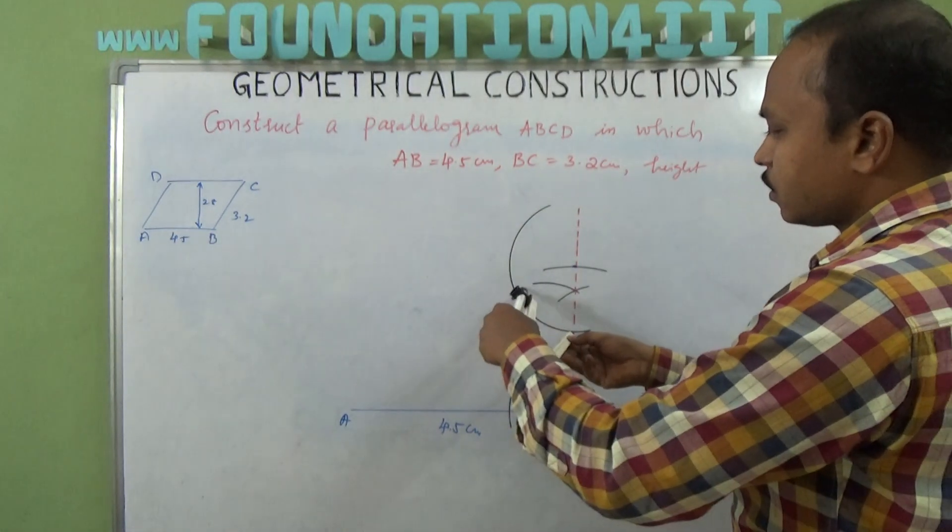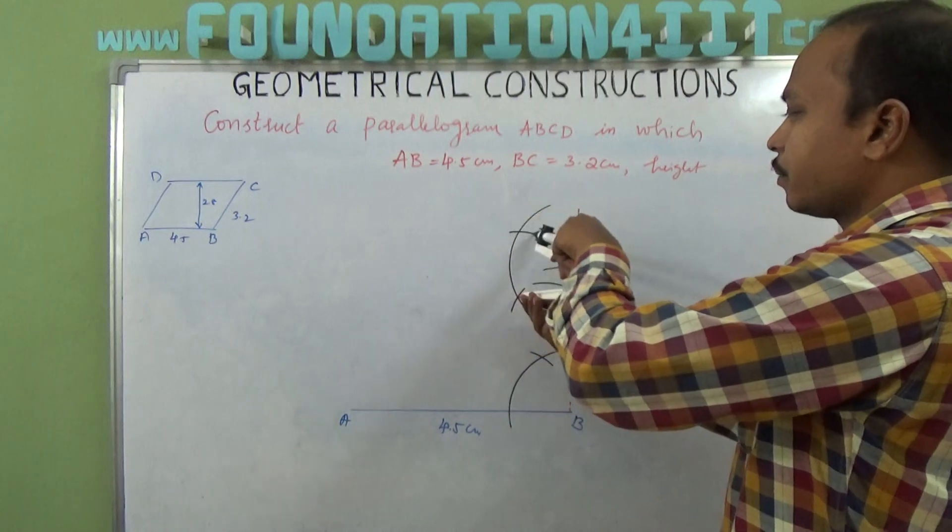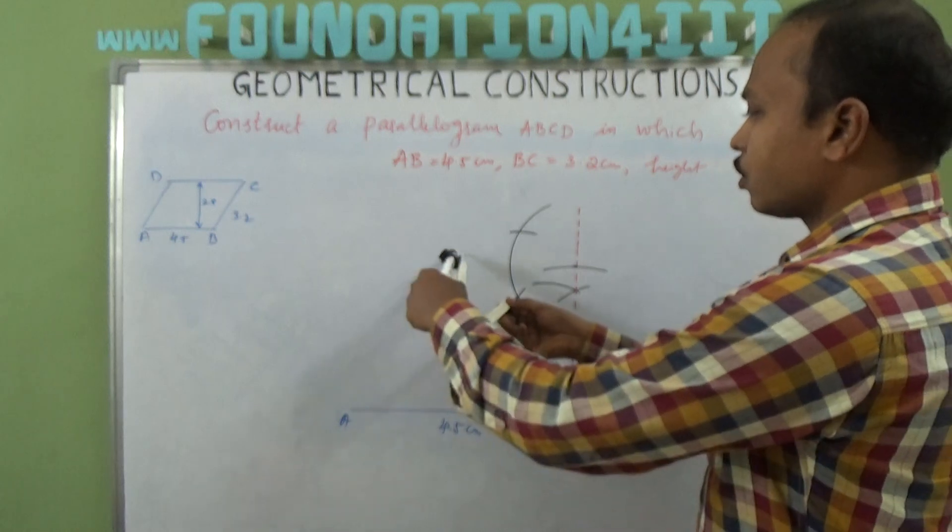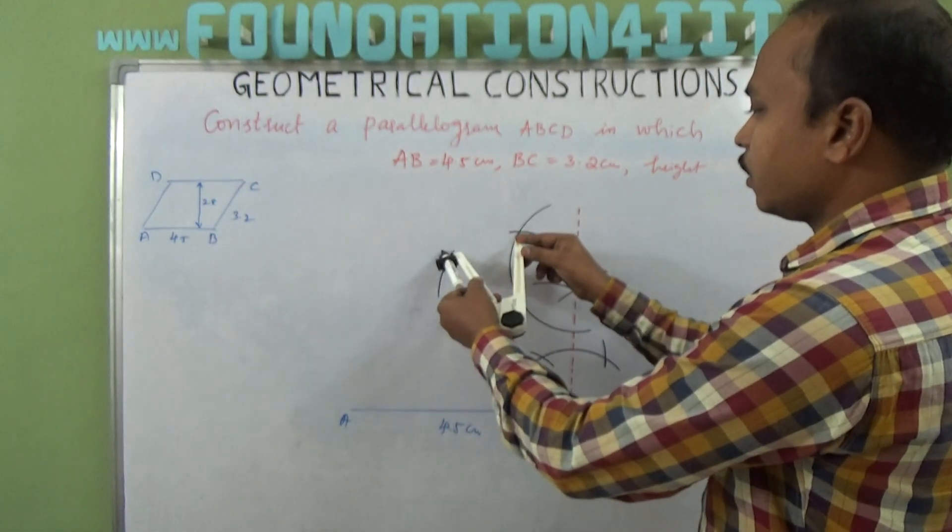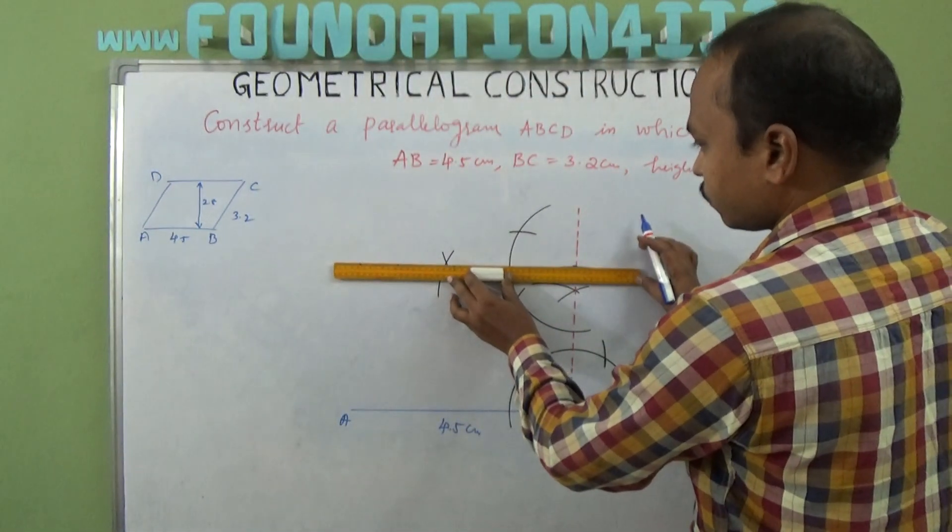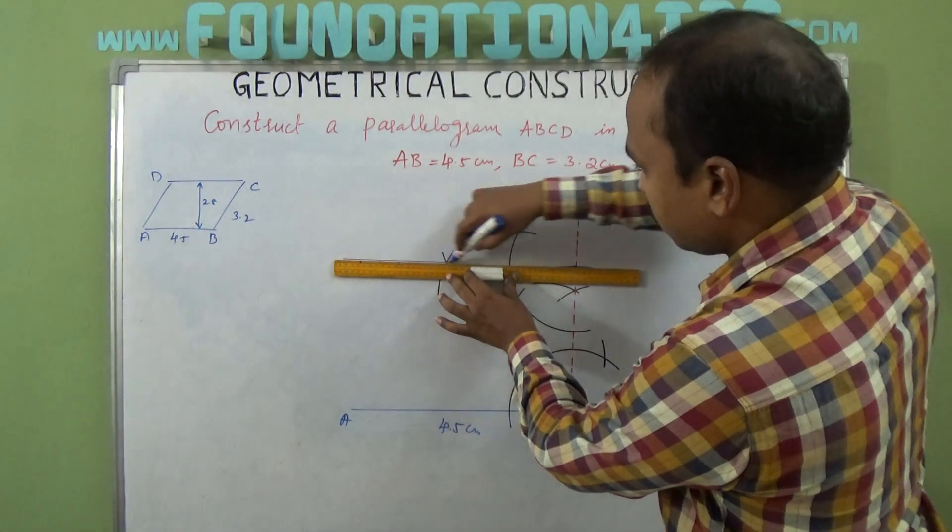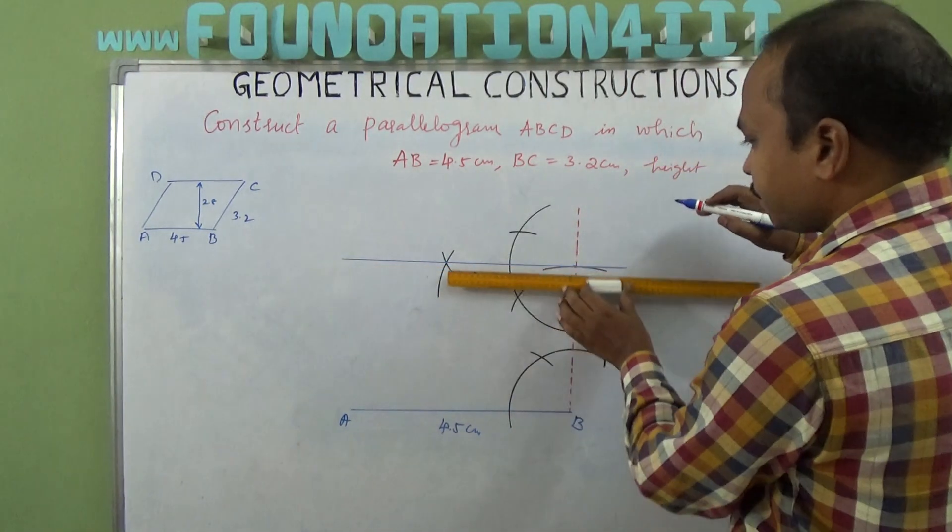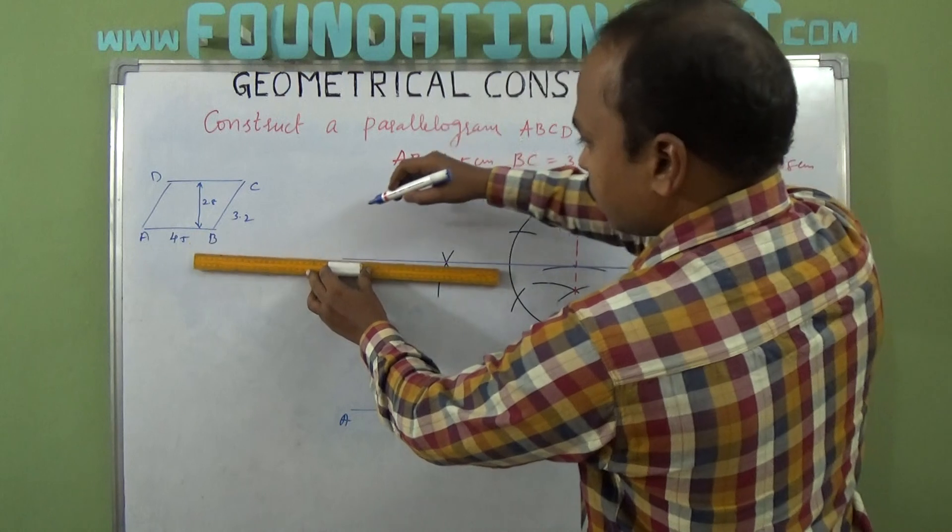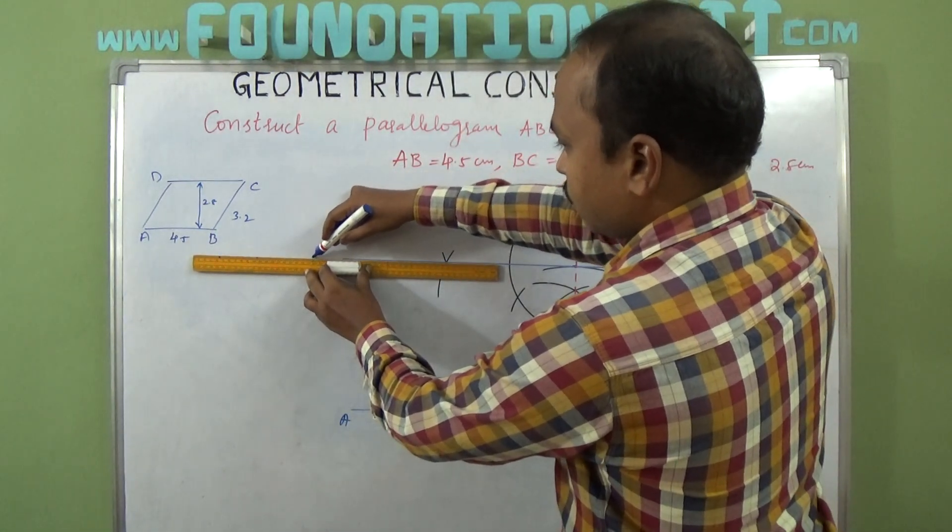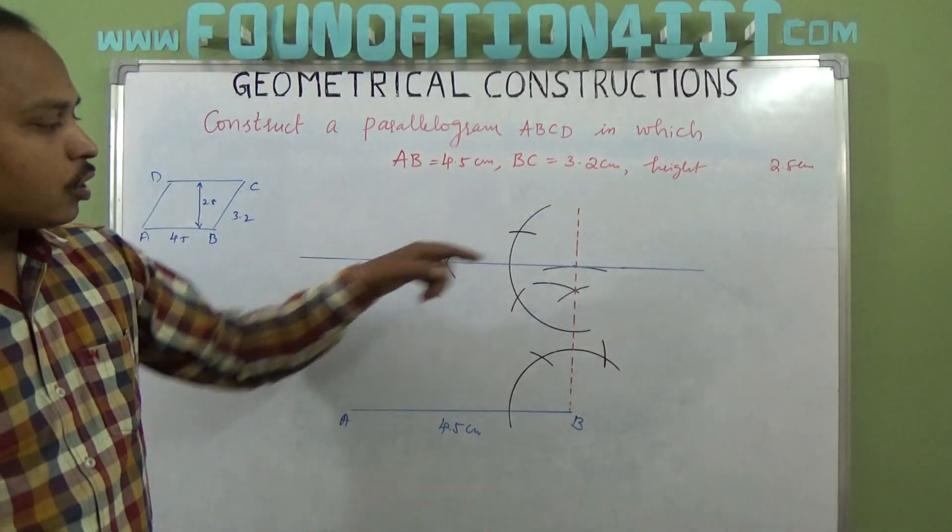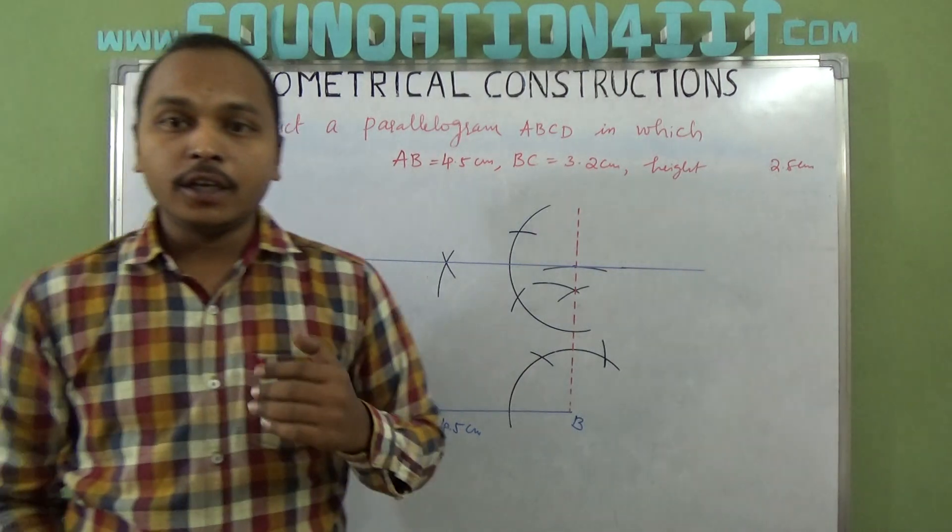From here, 60 and 120, because this line should be parallel to this. For the parallel graph, draw two arcs from here and here. So draw two arcs and join that, so there is a parallel line to this. It's exactly parallel. So you can extend both sides.